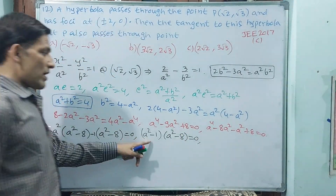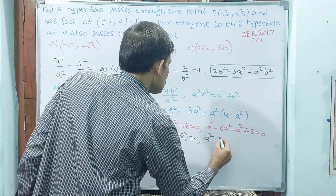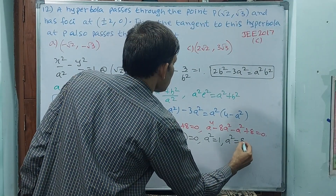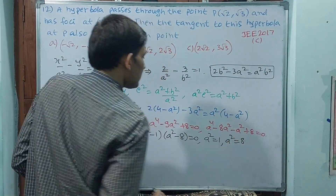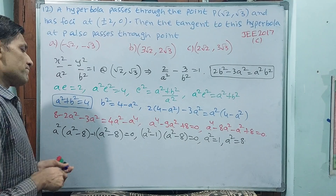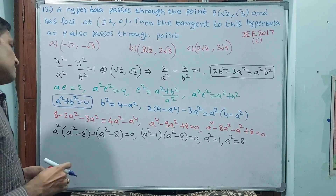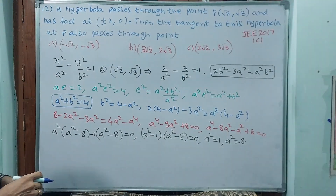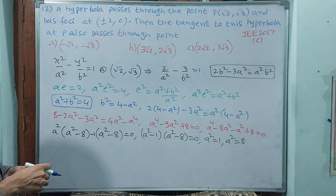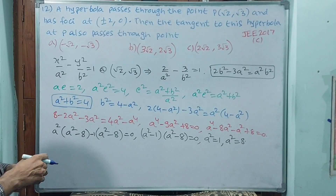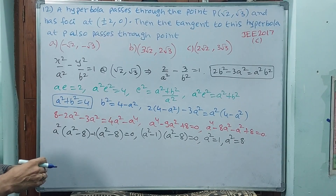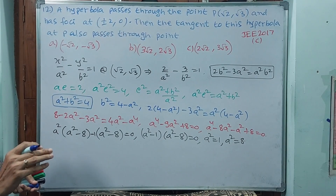Therefore: (a squared minus 1)(a squared minus 8) equals 0. So a squared equals 1, or a squared equals 8.